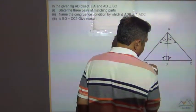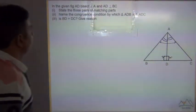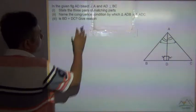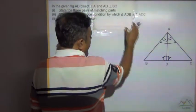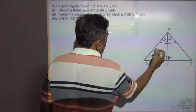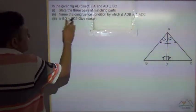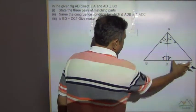Now state the three pairs of matching parts and name the congruence condition by which triangle ABD is congruent to triangle ADC. If BD is equal to DC, give the angle.